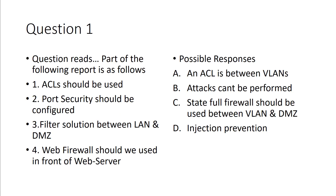The first question that I remember — one that stuck out and that I keep seeing over and over in study material — is: you receive a report or output and it shows technical controls like what ACLs should be used, port security should be configured, a filtering solution is required between LAN and DMZ, and some type of firewall should be used in front of the web server. Those were the technical controls, and they give you a few response options.